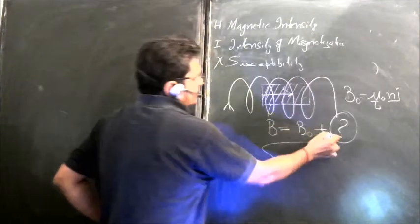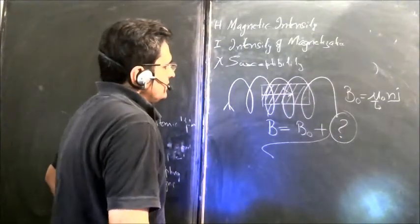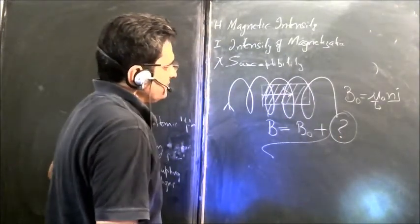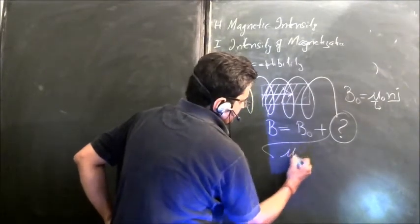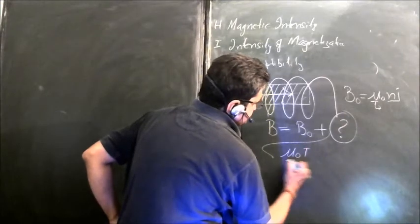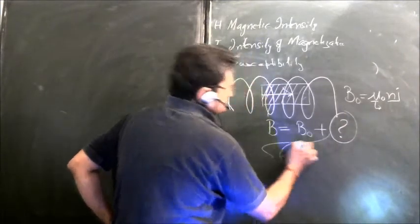It is represented by intensity of magnetization and we write this something as mu_0 times I. This is the additional magnetic field which has appeared here.